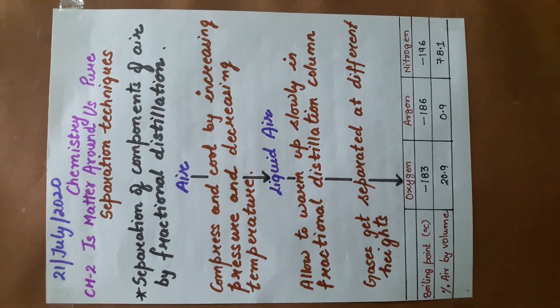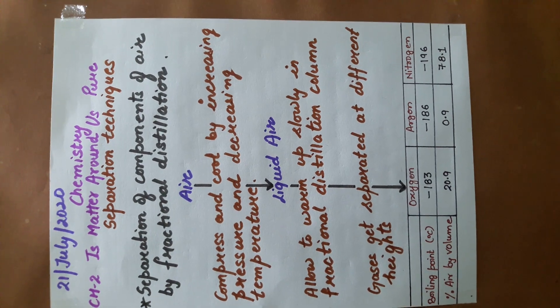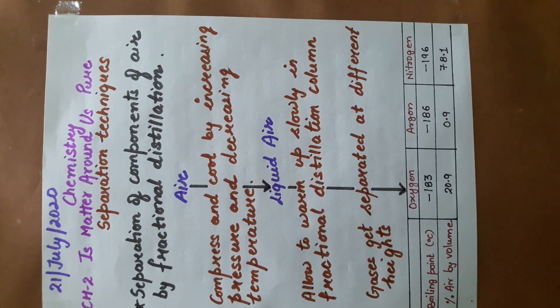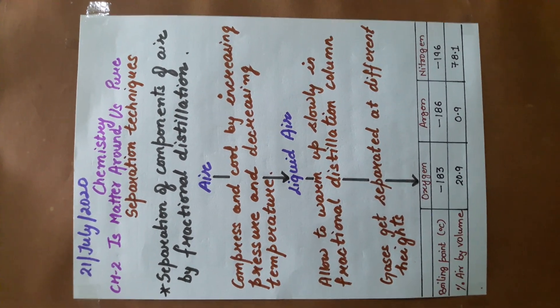As you can see, the boiling points are: oxygen is minus 183, argon minus 186, and nitrogen minus 196. So let's see a diagrammatic representation of this technique.